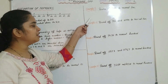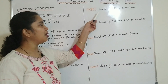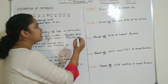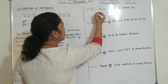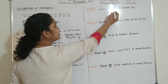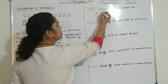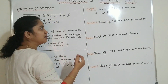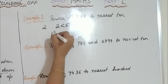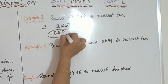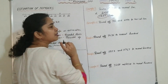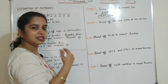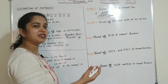Let's look at some examples. Round off the number 1852 to the nearest 10. You have to see the number in the 1s place. The number in the 1s place is 2. Since 2 is less than 5, the number will be rounded down. So the number will be 1850 — the 5 in the 10s place remains unchanged and the 1s place changes to 0. On the right-hand side of the number being rounded off, it will change to 0.